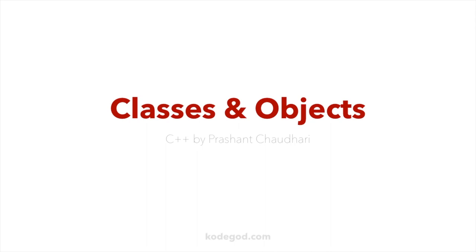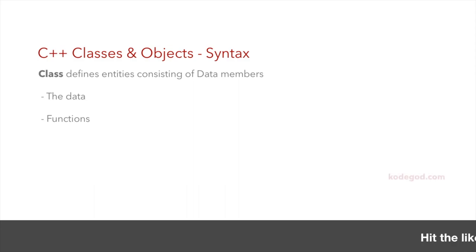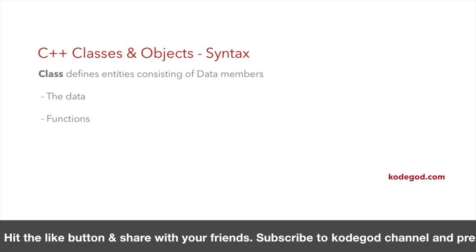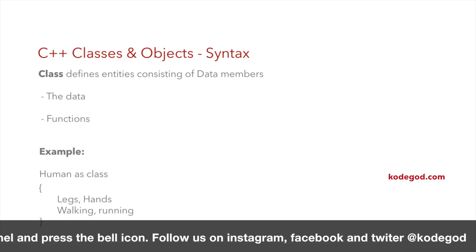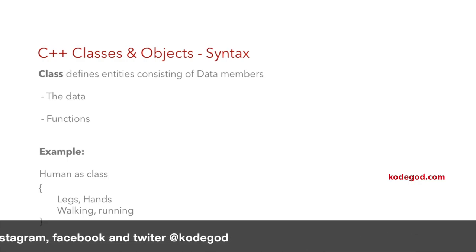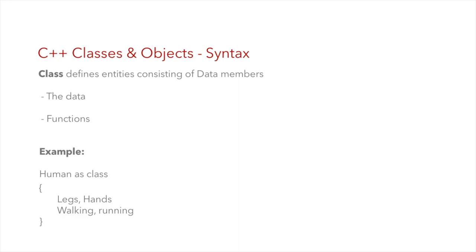A class consists of data and functions, clubbed together called data members. The data is nothing but the variables declared in the class, and functions are something that are part of the class and can perform certain actions, internally using the class variables. For example, if 'human' is a class, then 'legs' and 'hands' can be data, and 'walking' and 'running' can be functions.